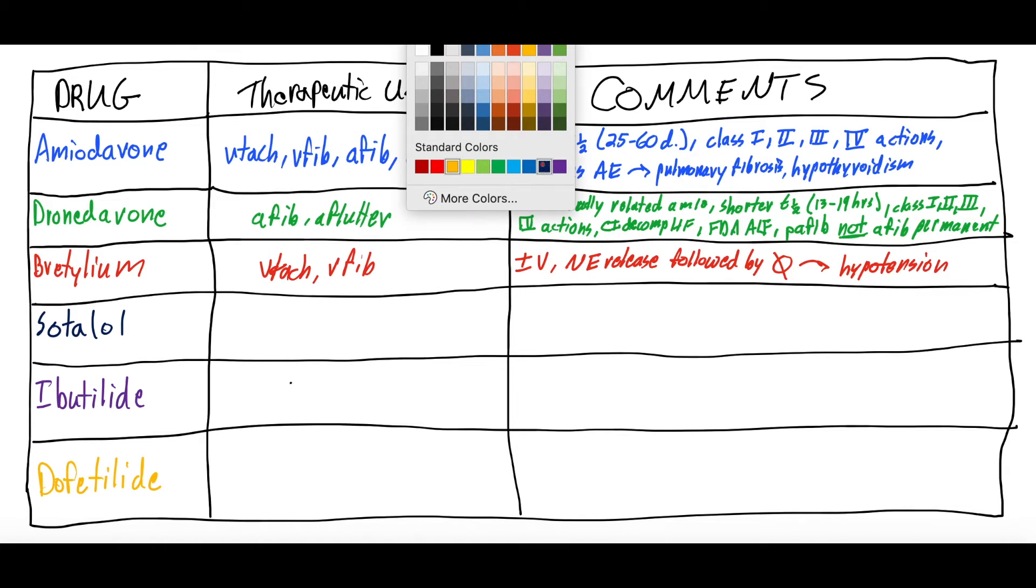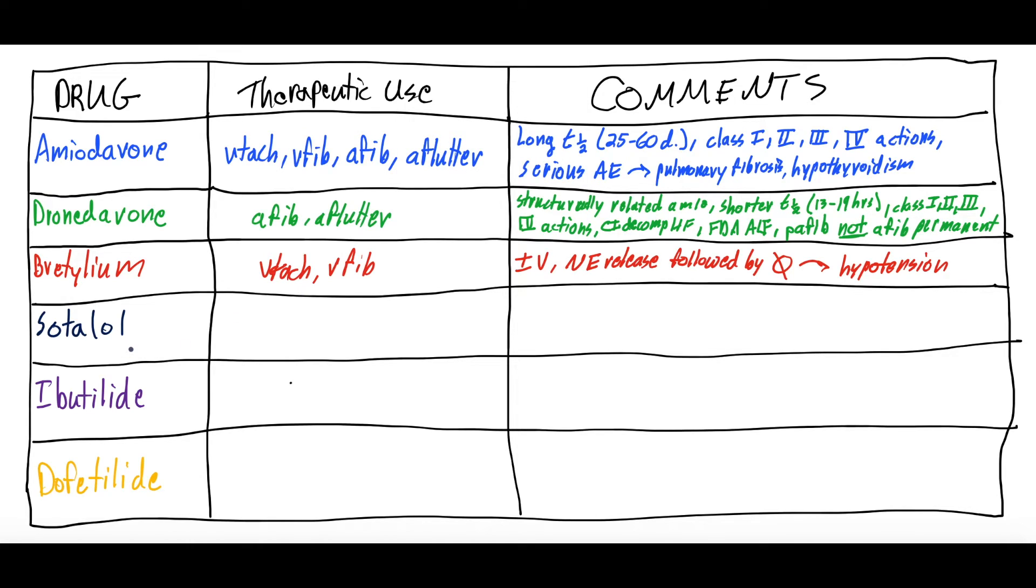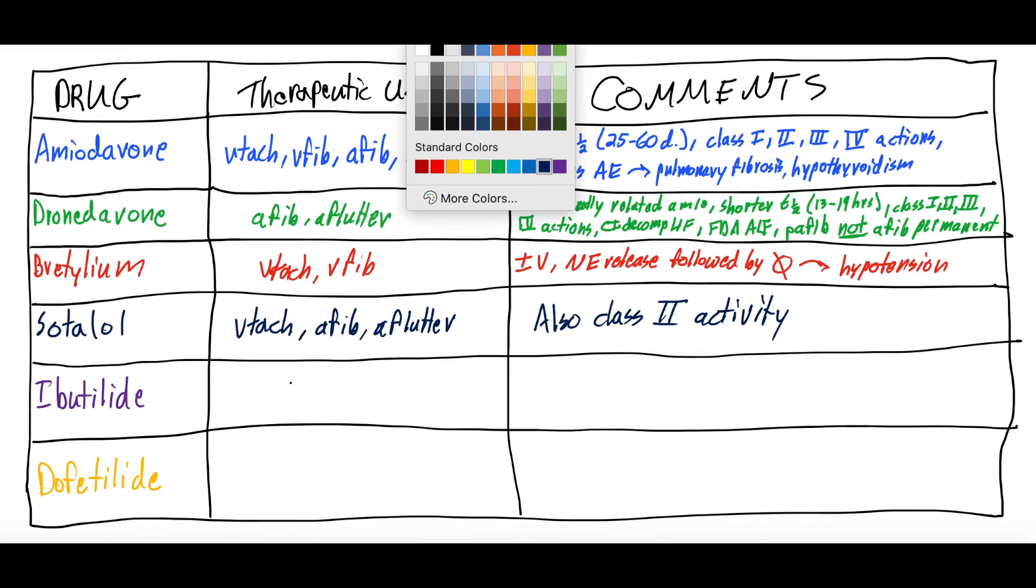Alright. Sotalol. You might recognize Sotalol from our Class 2 antiarrhythmic discussion as a non-selective beta blocker. It also has Class 3 actions. It can be used for ventricular tachycardia, as well as atrial fibrillation and atrial flutter. And then just of note, as we talked about, it also has Class 2, obviously, beta blocker activity. So, that's the big comment there.